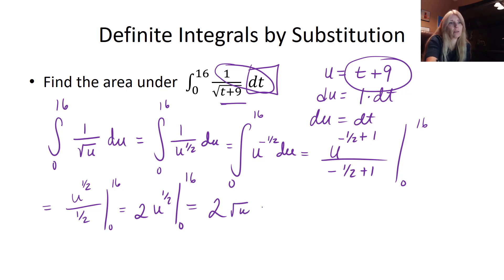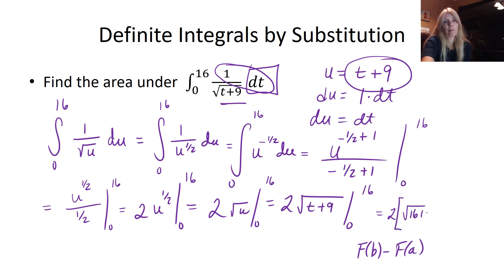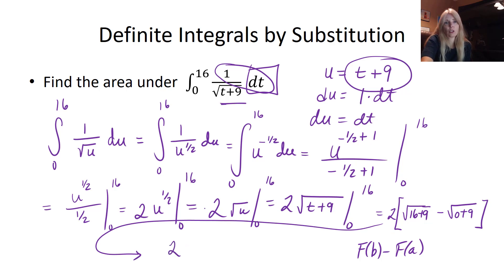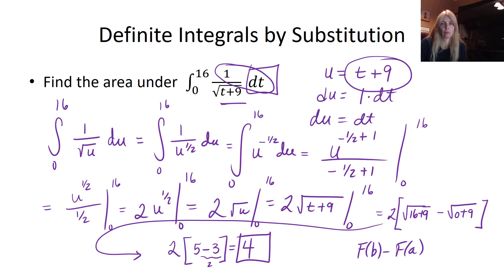The one half power is the same as the square root. Substituting back, u is t plus 9, so I evaluate 2 times the square root of (t plus 9) from 0 to 16. That gives 2 times the square root of 25 minus 2 times the square root of 9. The square root of 25 is 5 and the square root of 9 is 3, so the area is 2 times 5 minus 2 times 3, which equals 4. With the Fundamental Theorem, you just do that one extra step — and please don't forget to substitute back.